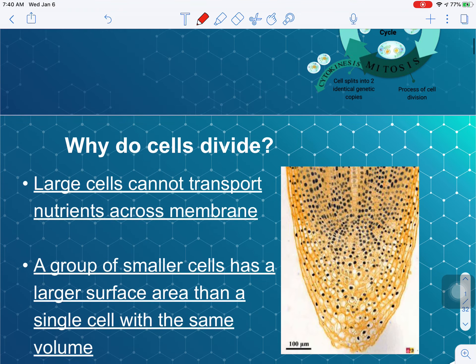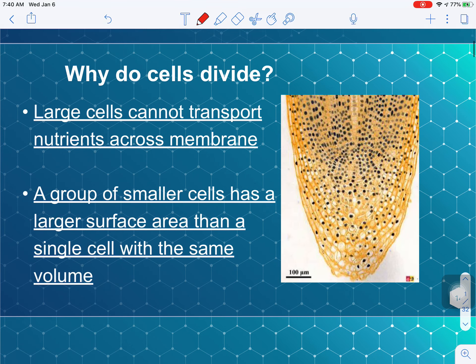So first let's review the two reasons why cells divide. This goes back to why cells are small. Because we have small cells, we need to have a lot of them in order to have an organism be of a certain size and function. The two reasons why cells have to divide is because large cells cannot transport nutrients across their membranes. Their volume is too big compared to their surface area to enable the nutrients that they need to come into the cell in a timely manner. Also a group of smaller cells has a larger surface area than a single cell with the same volume, and we saw that in the experiment that we looked at last class.